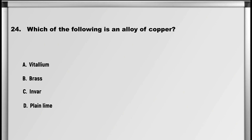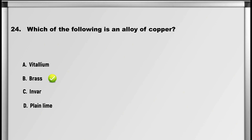Next up is question number 24: Which of the following is an alloy of copper? A. Vitalium, B. Brass, C. Invert, D. Plain line. Answer: B. Brass.